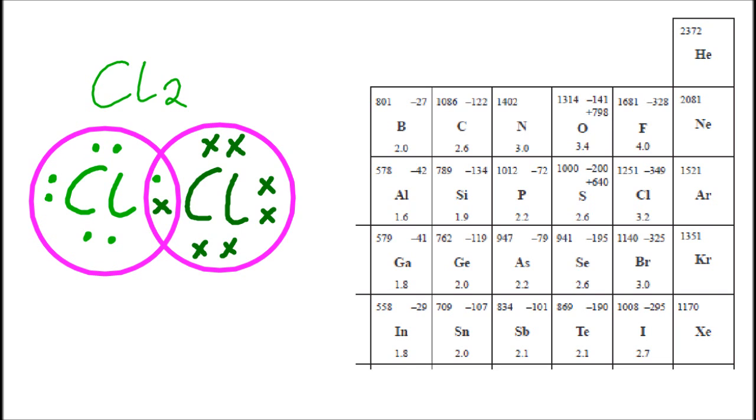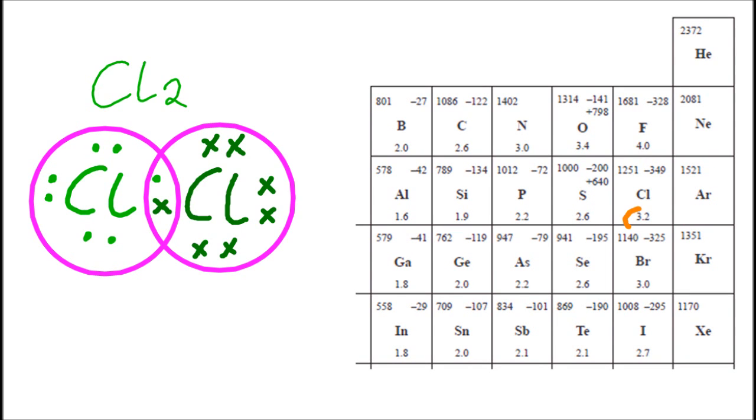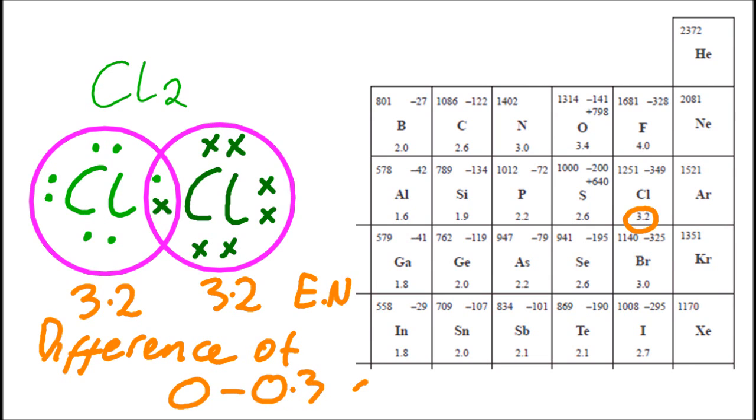Now, they both have an electronegativity of 3.2. So the electrons in the middle are shared right in the center, right in the middle. They aren't being pulled one way or the other. And a difference in electronegativity of zero to 0.3 is considered nonpolar. So those electrons and the bond are right in the middle, so chlorine is a nonpolar molecule.